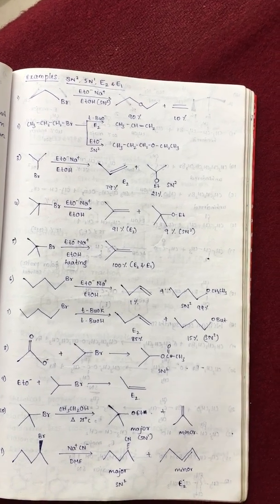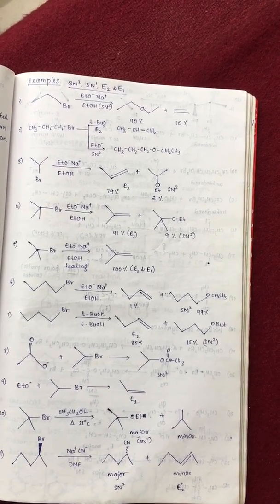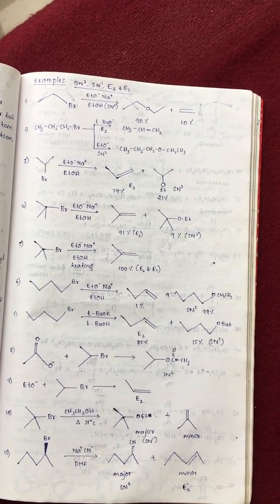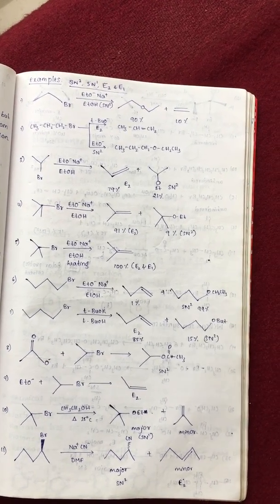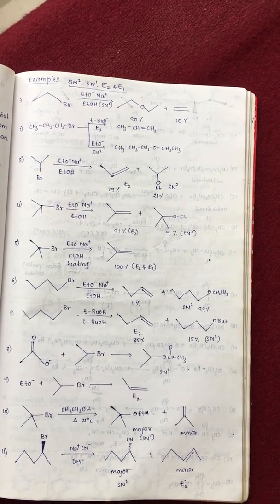Next, I am primary alkyl halide with tertiary butoxide and tertiary butyl alcohol. Tertiary butoxide ion is present, meaning that it gives E2 elimination product.